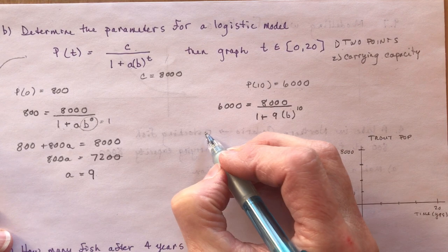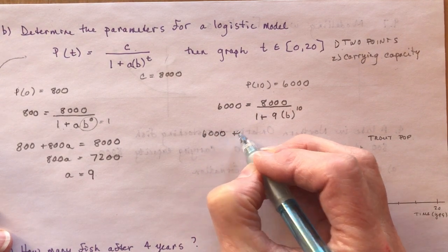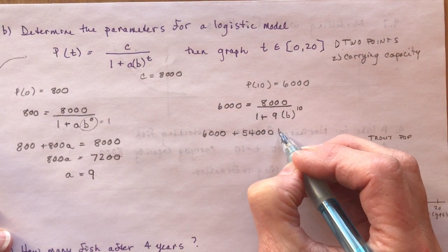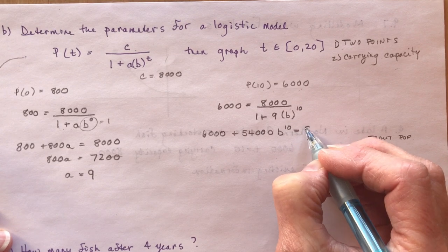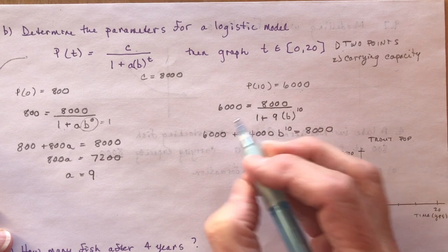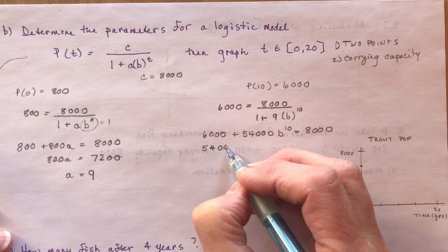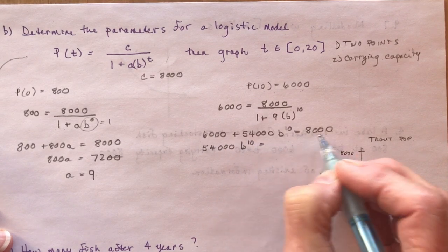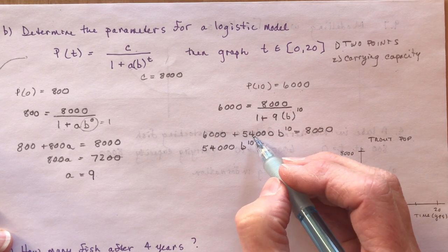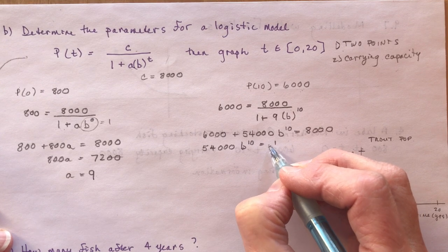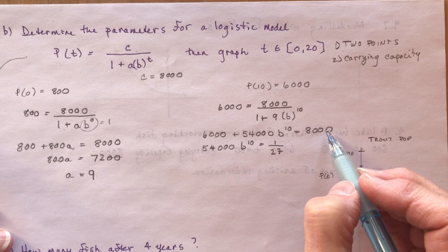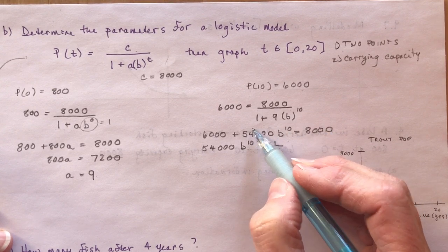So how do I find B here? Well, I would cross-multiply again, so that gives me 6,000 plus 54,000 B to the power of 10 equals 8,000. So now I'm going to subtract the 6,000 over here. So I'm going to get 54,000 B to the 10th equals 2,000. I'm dividing by 54,000, so that's going to give me 1 over 27.